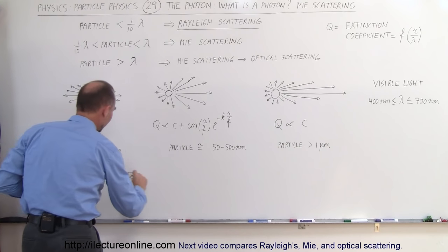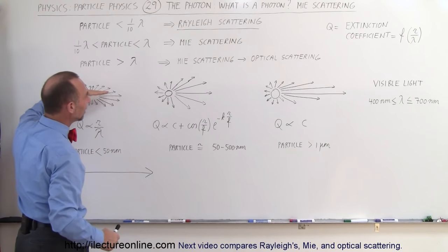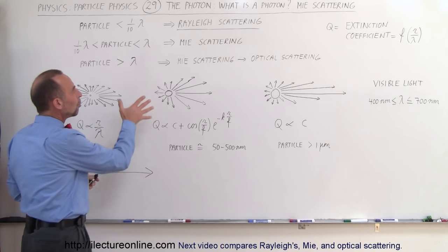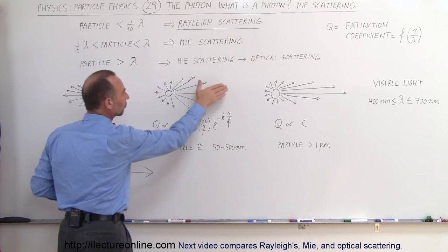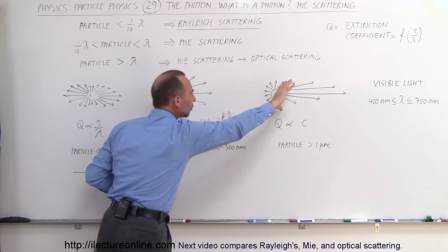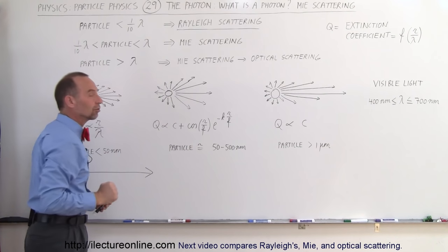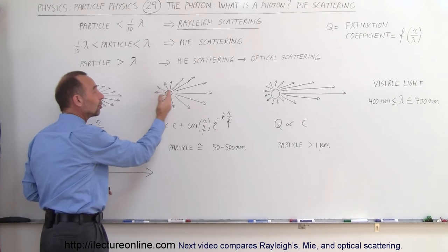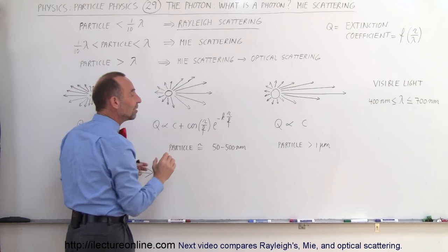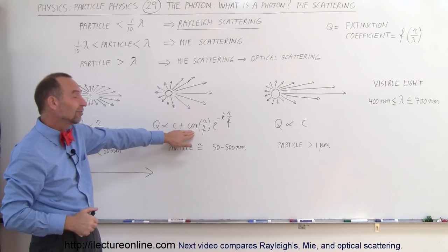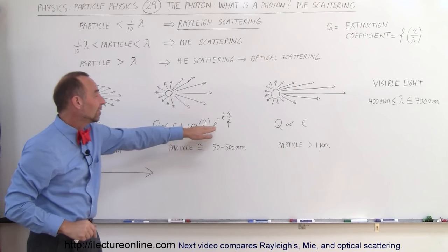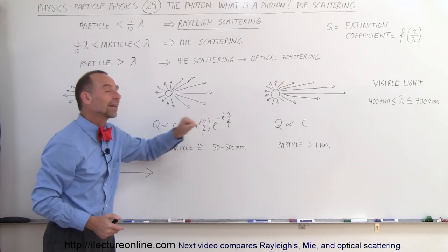Let's say the photons are incident in a given direction and they hit the particle, which is now bigger than the very tiny particles where we have Rayleigh scattering. Then more of the intensity of the scattering goes forward in a single dimension. If the photons come in this direction, then most of the scattering will be in the forward direction, and very little scattering will be in the backward direction. The amount of reflection or scattering in the backward direction depends upon the ratio of the radius of the particle divided by the wavelength, not in a linear relationship, but in a kind of trigonometric relationship like a cosine or sine function. It actually varies with that ratio, and that variation diminishes as the ratio of r over lambda gets bigger.